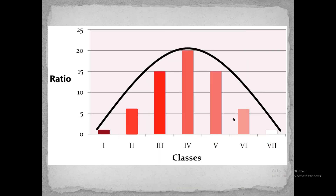This can be shown by the help of a graph. There are seven distinct classes in which wheat kernel color can appear. There is a bell-shaped curve, which is the characteristic feature of quantitative inheritance. In quantitative inheritance there will always be a bell-shaped curve due to the different gradation of phenotypic expression in the F2 progeny.